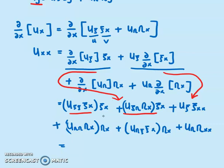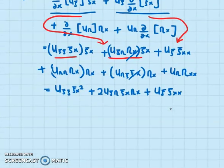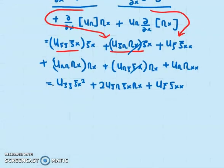Simplifying, U_xx = U_ψψ·ψ_x² + 2·U_ψη·ψ_x·η_x + U_ψ·ψ_xx + U_ηη·η_x².